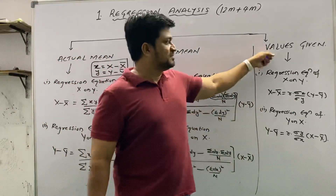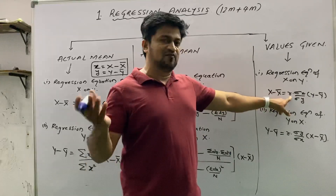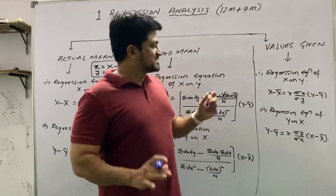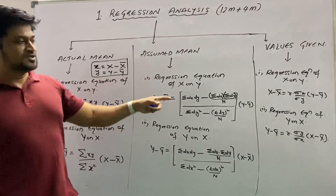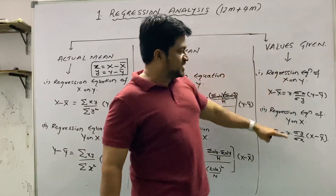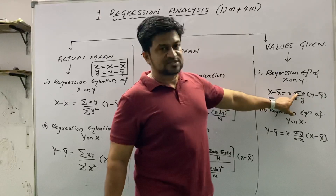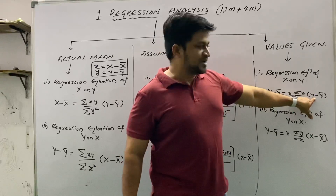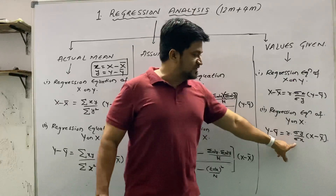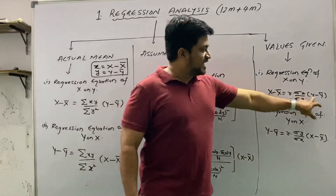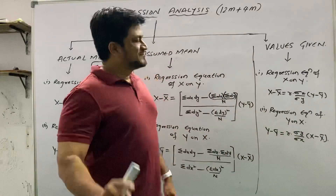The third type is when values are directly given to us. Regression equation of x on y: X minus X-bar equals r into standard deviation of x divided by standard deviation of y, into Y minus Y-bar. Regression equation of y on x: Y minus Y-bar equals r into standard deviation of y divided by standard deviation of x, into X minus X-bar. Here r represents the correlation value. A memory tip: whichever variable is on the left side, its standard deviation goes in the denominator.